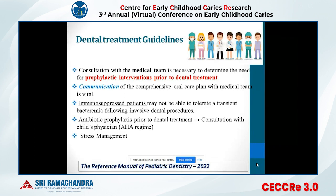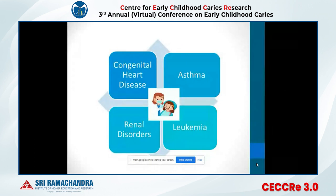Many patients are immunocompromised and may require antibiotic prophylaxis. Many children also require anxiety management, which could be in the form of pre-medication or treatment under nitrous oxide oxygen sedation. The antibiotic prophylaxis generally followed is the American Heart Association regime, though the patient's physician should also be consulted for any additional requirements. Today we will deal with four commonly seen medically compromising conditions in children: congenital heart disease, asthma, renal disorders, and leukemia.